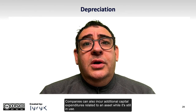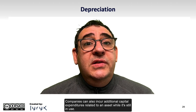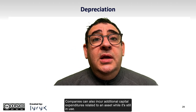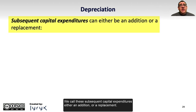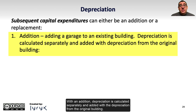Companies can also incur additional capital expenditures related to an asset while it is still in use. We call these subsequent capital expenditures either an addition or a replacement. An example of an addition might be adding a garage, a warehouse, or a new wing to an existing building. With an addition, depreciation is calculated separately and added with the depreciation from the original building.